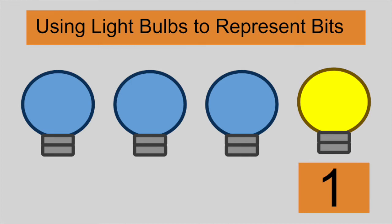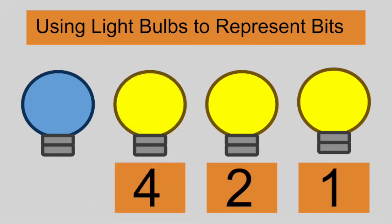Suppose each bulb represents a power of 2 when turned on. The rightmost bulb is 2 to the power of 0, which is 1. The next bulb over is 2 to the power of 1, which is 2. The next bulb after that is 2 to the power of 2, which is 4. And finally, the leftmost bit will represent 2 to the power of 3, which is 8.